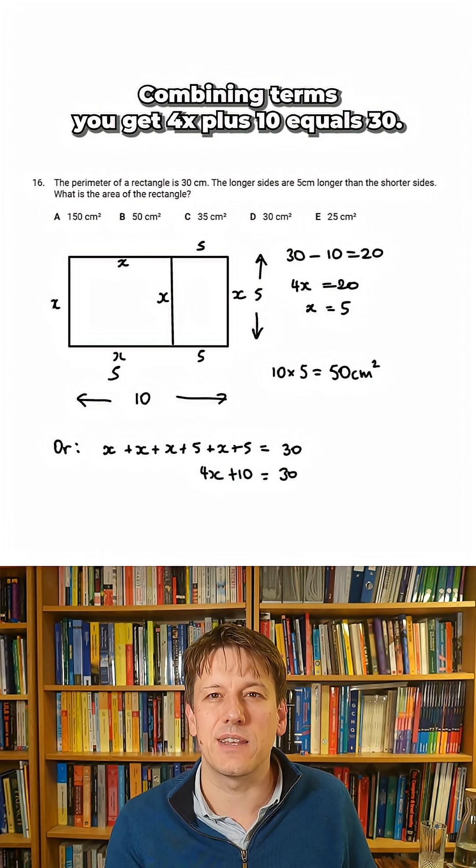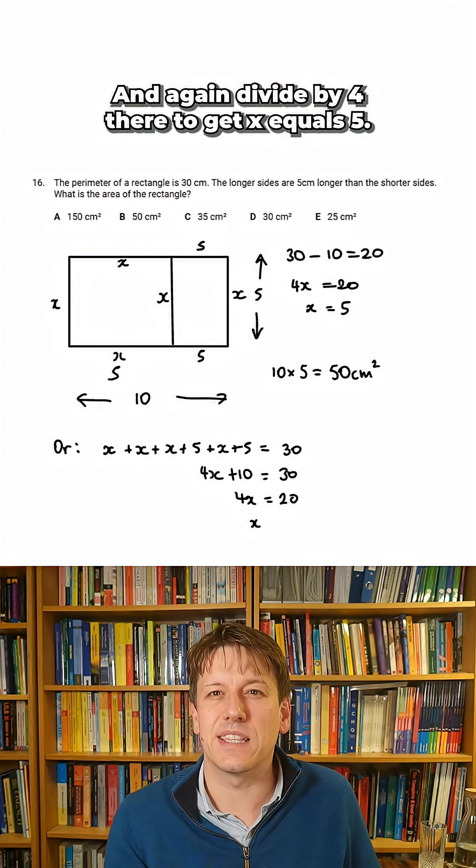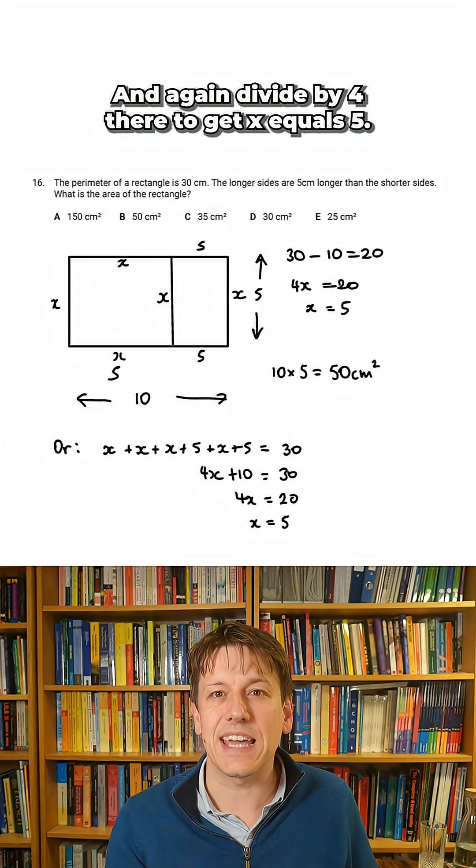Combining terms, you get 4X plus 10 equals 30, subtract 10 from each side to get 4X equals 20, and again divide by 4 there to get X equals 5.